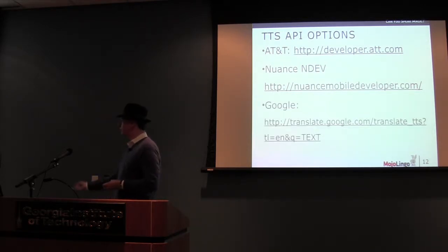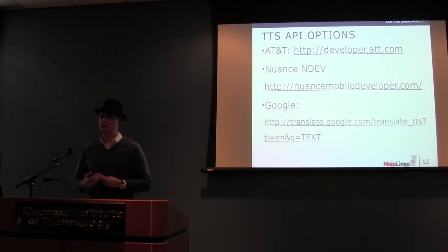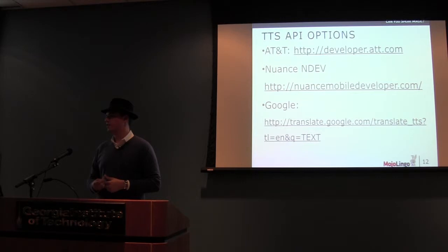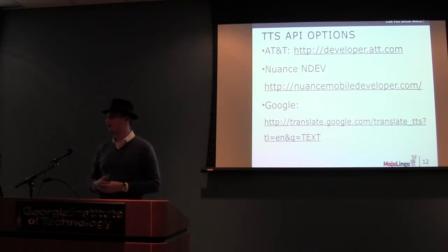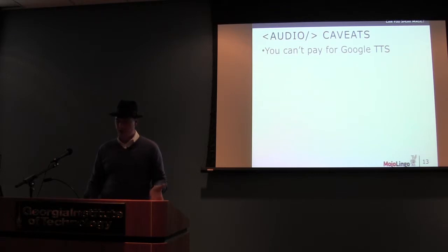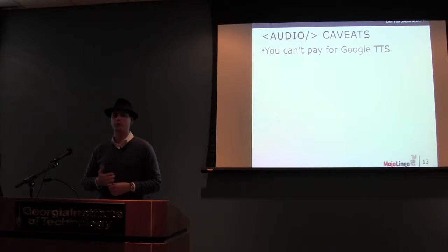The last I'll mention is Google. Google's couldn't be simpler — literally hit this URL, translate TTS, pass it a language and some text, and you get back an audio file. The main problem is you can't pay for it, which means if they decide to change their API or discontinue it, you're kind of out of luck. We actually had a customer who tried to go to production using Google's text-to-speech and very quickly found out they were rate limited — so that wasn't going to work. He ended up switching to Nuance.